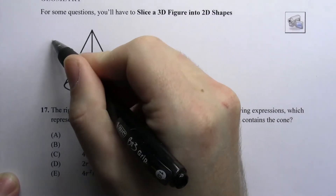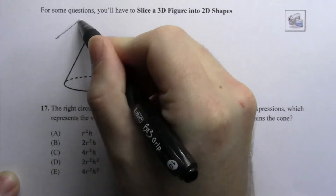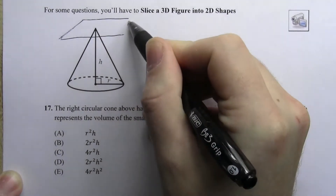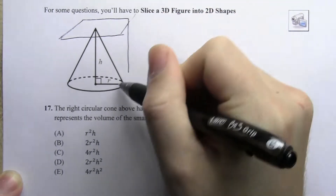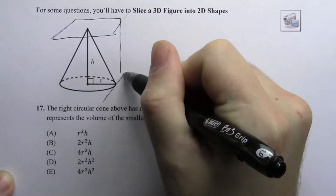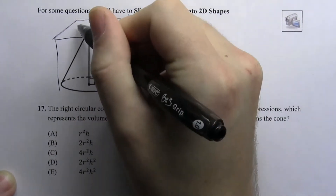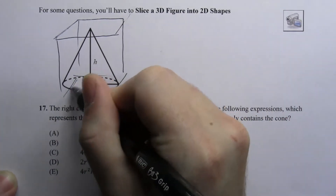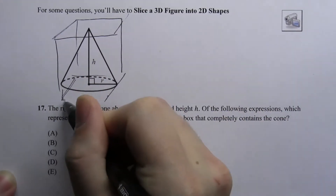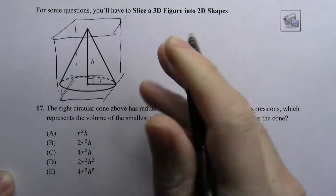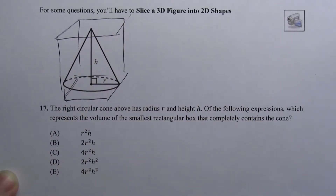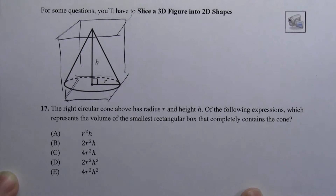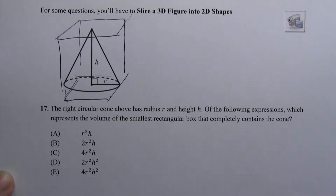We can picture it as something like this — there's the top of the box, and then it comes down and contains the cone. You can see already this is not the most straightforward way of thinking about this, because we're dealing with a two-dimensional surface — the paper — and we have three-dimensional shapes.